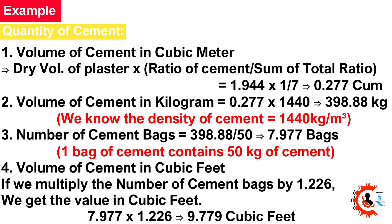We know the density of cement = 1,440 kg/m³. Number of cement bags = 398.88 ÷ 50 = 7.977 bags. One bag of cement contains 50 kg. Volume of cement in cubic feet: multiply number of bags by 1.226 — 7.977 × 1.226 = 9.779 cubic feet.